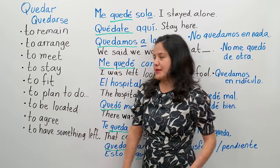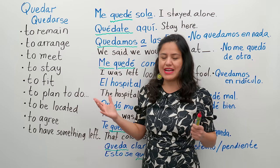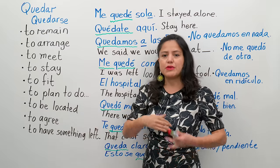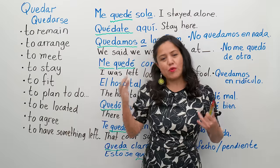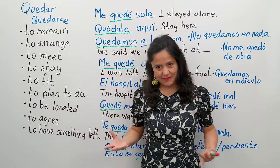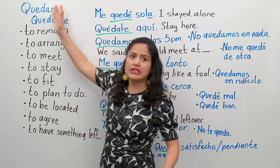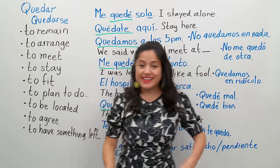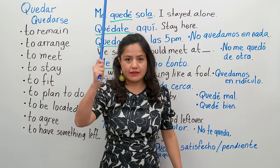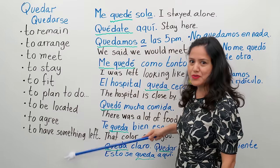Now, it's good, right? You'll say, okay, I'll memorize that. No. You don't have to memorize that. You have to look at it and see — okay, remain, agree, to have something left, to be located — I can use quedar. But the way you're going to learn it is with examples, because with examples you're going to visualize it. So you have an idea now of so many verbs and the lonely quedar, but then we're going to see examples so you can learn quedar, quedarse, and all the things you can do with it.